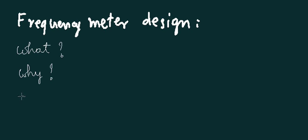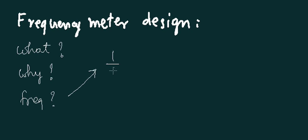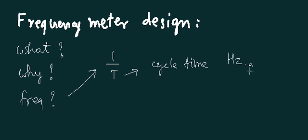Now we try to see what frequency is — what do we understand by frequency? Frequency is cycles per second. It is related to 1 over T, where T is the cycle time, and its unit is hertz or cycles per second. So this fundamental concept is brushed up.